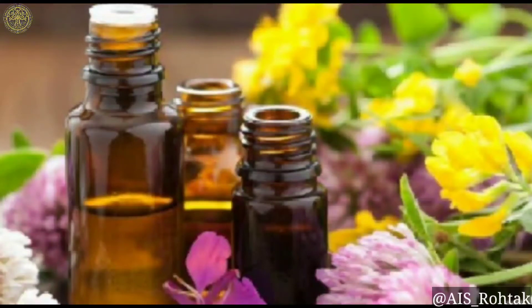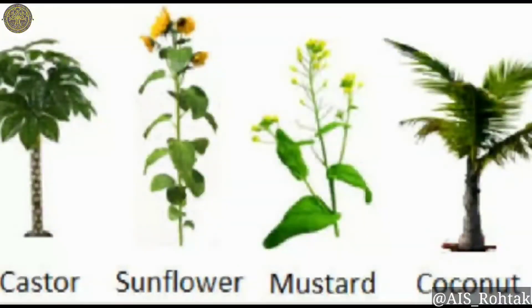We get oil from plants. Seeds of some plants are oily. This oil is used for cooking and various other purposes, like castor oil, sunflower oil, mustard oil and coconut oil. Sunflower oil and groundnut oil are used for cooking, and almond oil and coconut oil are used to apply on hair.